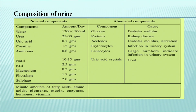The composition of urine can be explored in terms of normal and abnormal components. Normal urine contains water, urea, uric acid, creatinine, ammonia, sodium chloride, potassium chloride, magnesium, phosphate, sulfate, and minute amounts of fatty acids, amino acids, pigments, enzymes, hormones, vitamins and antibiotics. The quantity may vary depending on physiological condition. Abnormal components include: glucose, which is a symptom of diabetes mellitus; proteins, which indicate kidney disease; acetones, a symptom of diabetes mellitus or starvation; erythrocytes, indicating infection in the urinary system; leukocytes in large numbers, indicating infection in the urinary system; and uric acid crystals, which represent the presence of gout.